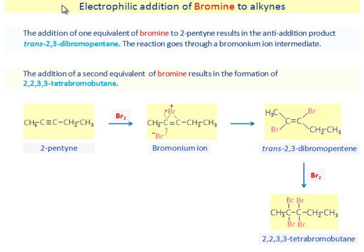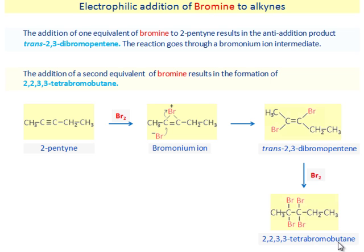Electrophilic addition of bromine to alkynes. The addition of one equivalent of bromine to 2-pentyne results in an anti-addition product, trans-2,3-dibromopentene. The reaction goes through a bromine ion intermediate. The addition of a second equivalent of bromine results in the formation of 2,2,3,3-tetrabromopentane.